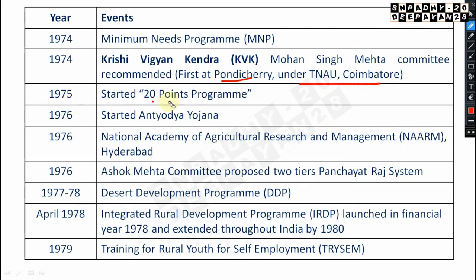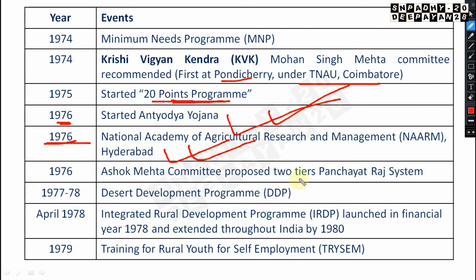In 1976, the Antyodaya Yojana was started. Also in 1976, the National Academy of Agricultural Research and Management (NAARM) was established with its headquarter at Hyderabad. The Ashok Mehta Committee proposed a two-tier Panchayati Raj system in 1976. The Desert Development Program (DDP) was started in 1977 to 78.